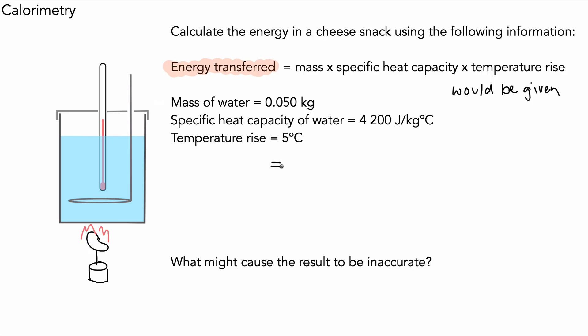We need the mass of the water, which is 0.050 kg, times the specific heat capacity of the water, which is 4200, times the temperature rise, which is 5 degrees C. Multiply that out and we get a value of 1050, and the unit is joules for energy.